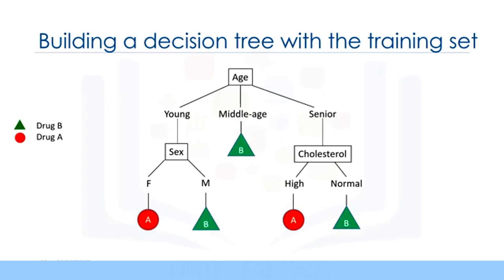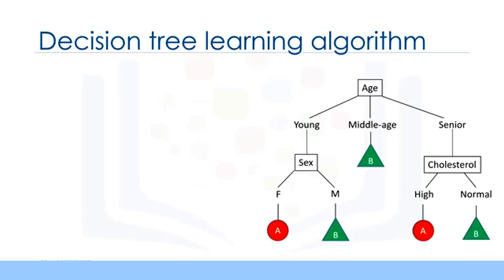As you can see, decision trees are about testing an attribute and branching the cases based on the result of the test. Each internal node corresponds to a test, and each branch corresponds to a result of the test, and each leaf node assigns a patient to a class. Now the question is, how can we build such a decision tree?